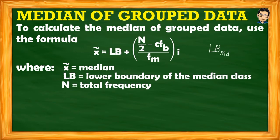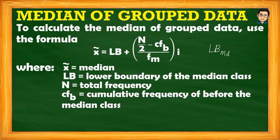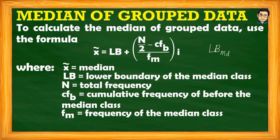n is the total frequency. CFb or CF sub b is the cumulative frequency before the median class — we'll explain that shortly. F sub m is the frequency of the median class; we can only identify this after we've determined the median class. Finally, i is the class interval. That is the formula for calculating the median of grouped data.